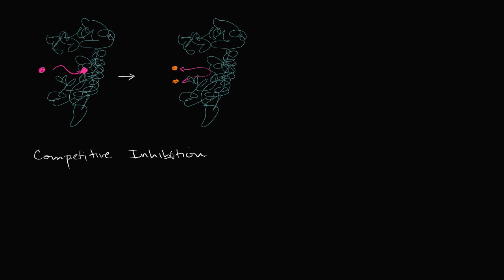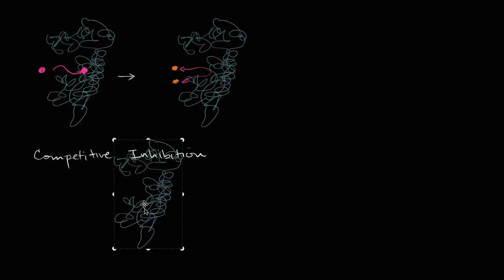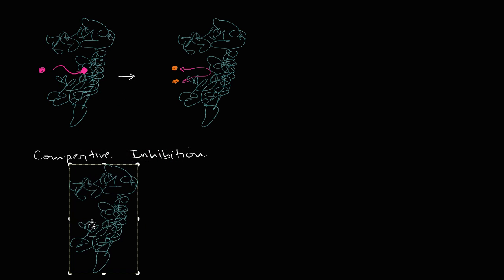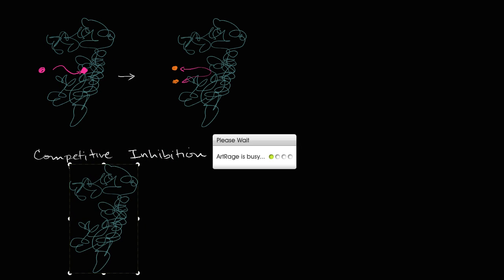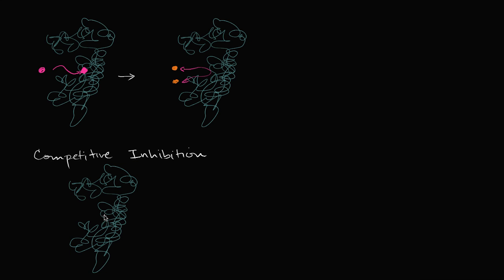So the classic case of competitive inhibition is if there's some molecule that competes for the substrate at the active site. As we'll see, this isn't the only form of competitive inhibition, but this is the one you will most typically see in a textbook. So that's our enzyme again, and this right over here where I'm circling is the active site.